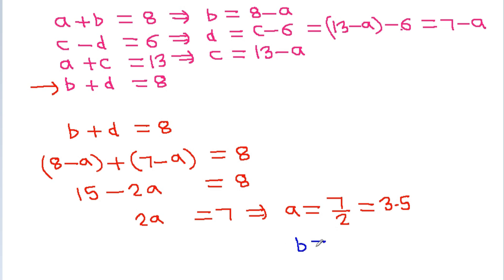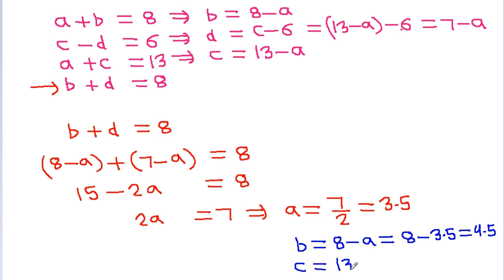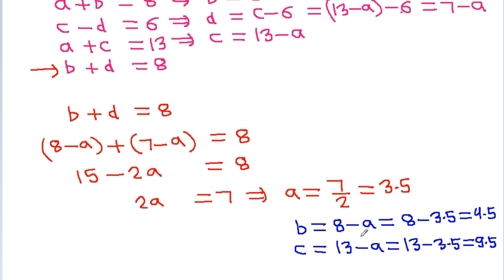And B is equal to 8 minus A, that will be equal to 8 minus 3.5, and it is 4.5. And C is equal to 13 minus A, so it will be 13 minus 3.5. And D is equal to 7 minus A, that will be 7 minus 3.5, and it is 3.5.